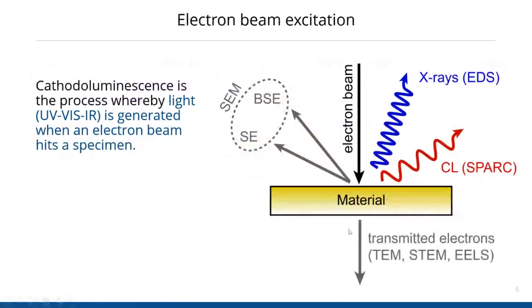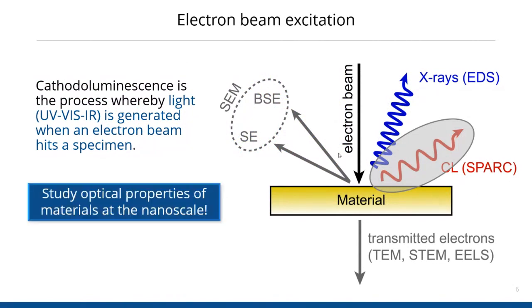So let's move to cathodoluminescence imaging. You excite your material with an electron beam, and during that process many signals are generated simultaneously — one of which is light. That is what you measure in cathodoluminescence. The main motivation for using cathodoluminescence in plasmonics is that because you are using an electron beam with a small beam waist, you can study materials at length scales much smaller than the diffraction limit of light — studying optical properties at the nanoscale.